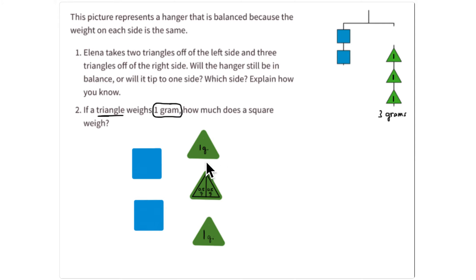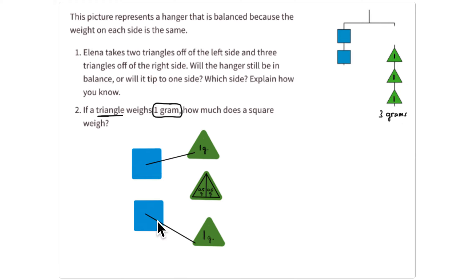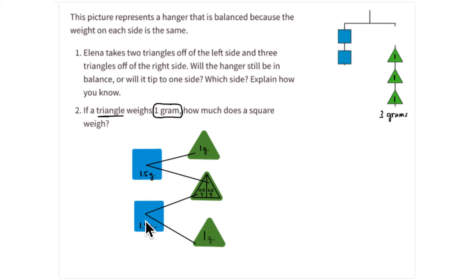Well, if each one of these weighs one gram, I can give one gram, or one triangle, to one square, one gram or one triangle to another square. And the last one I can divide in half and give half to one square and half to the other square.